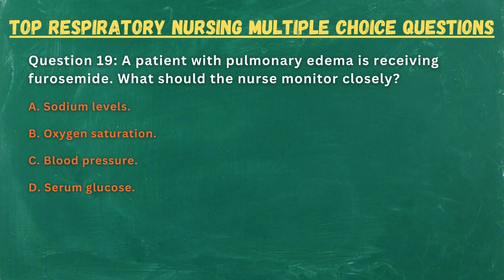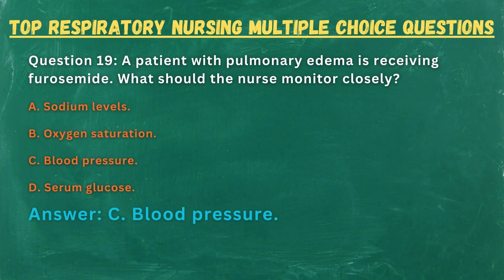Question 19. A patient with pulmonary edema is receiving furosemide. What should the nurse monitor closely? A. Sodium levels. B. Oxygen saturation. C. Blood pressure. D. Serum glucose. Answer: C. Blood pressure.